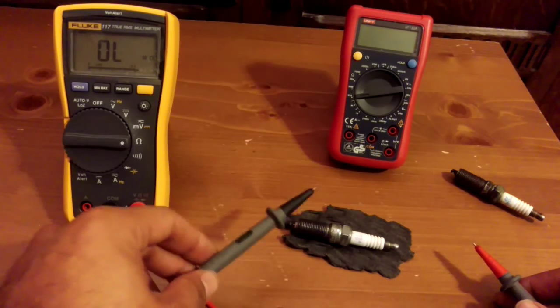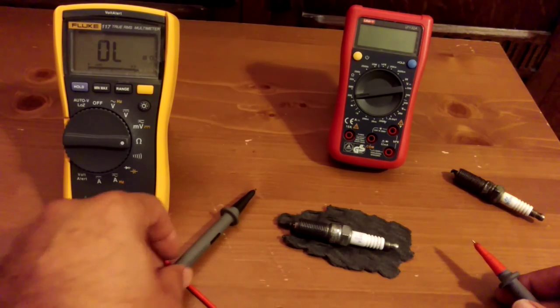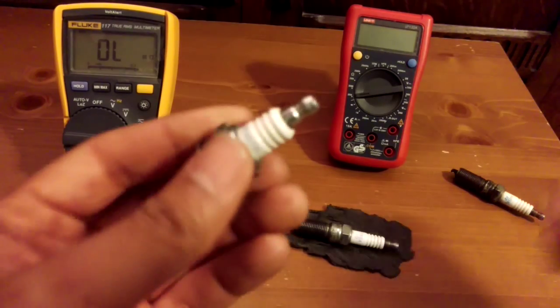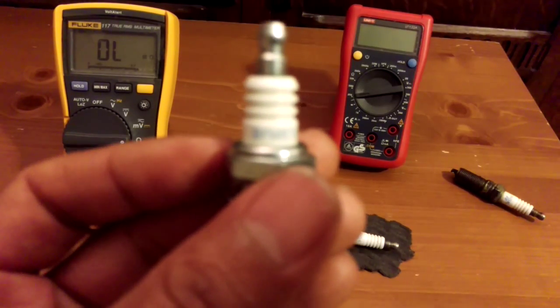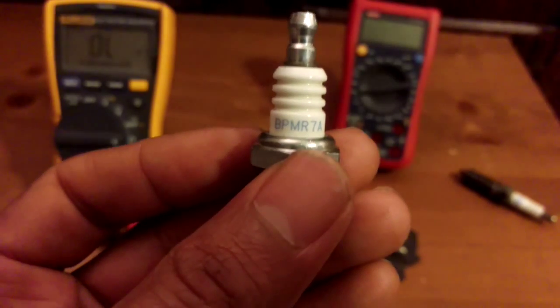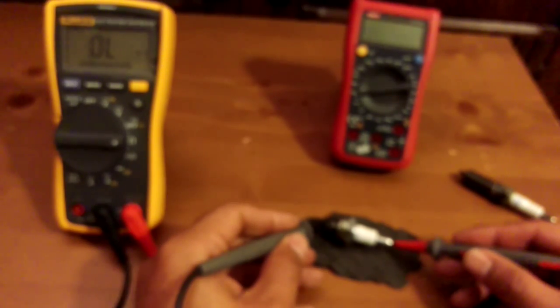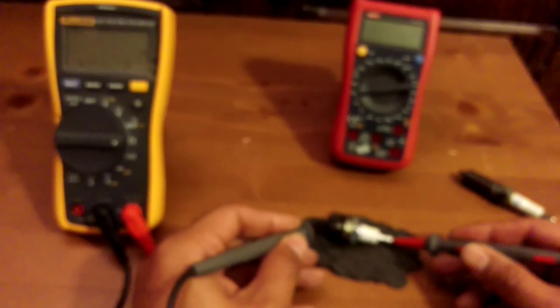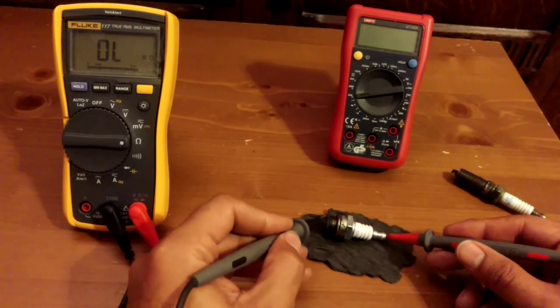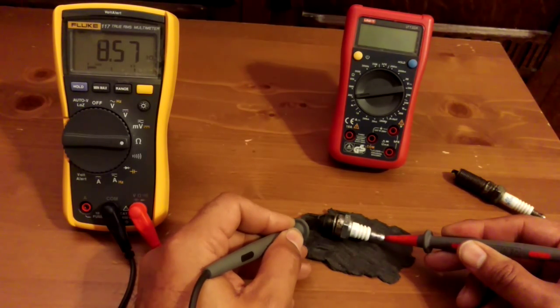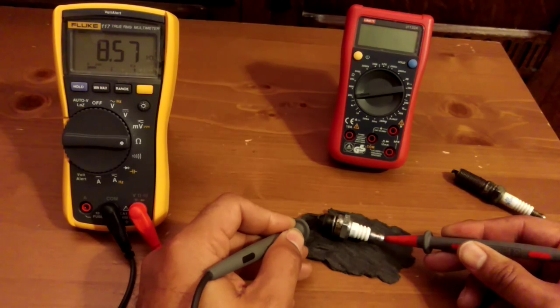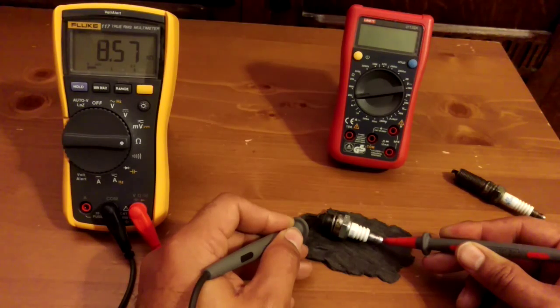The 3,500 to 5,000 is on car spark plugs or automotive spark plugs, but some spark plugs like this one, this one's off a chainsaw and it is a resistor spark plug. You can see the R in the title there. On this particular one, the figure is around about 8,000. Let's just zoom in on the multimeter display. Yeah, it's 8.57 kilo-ohms, so 8,570.